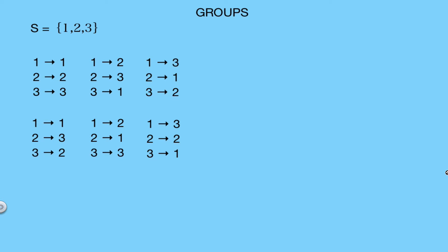These are the 6 different permutations that can be applied to this set. If we take the set containing the 6 different permutations along with the composition operation, we see that this is a group.